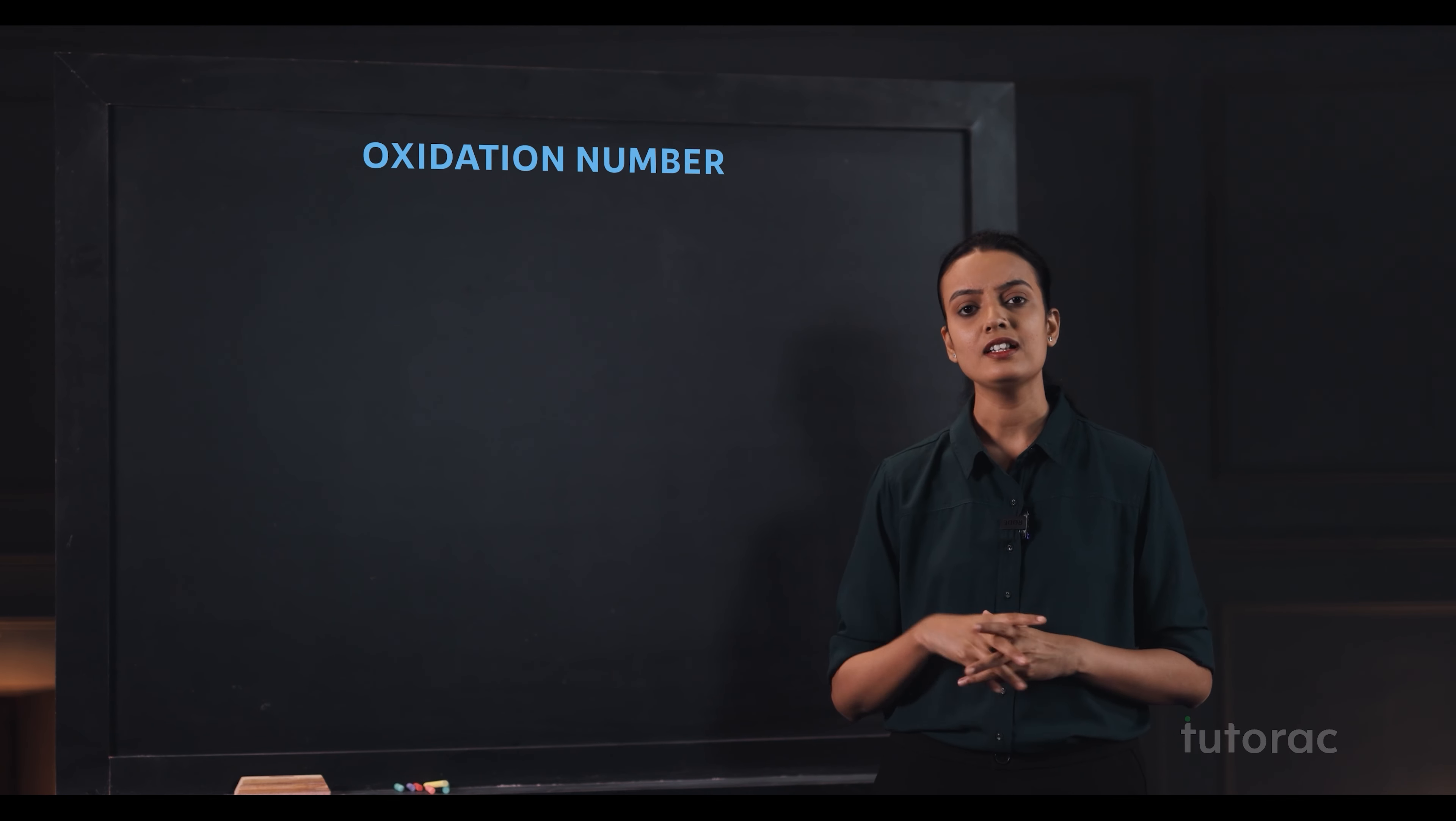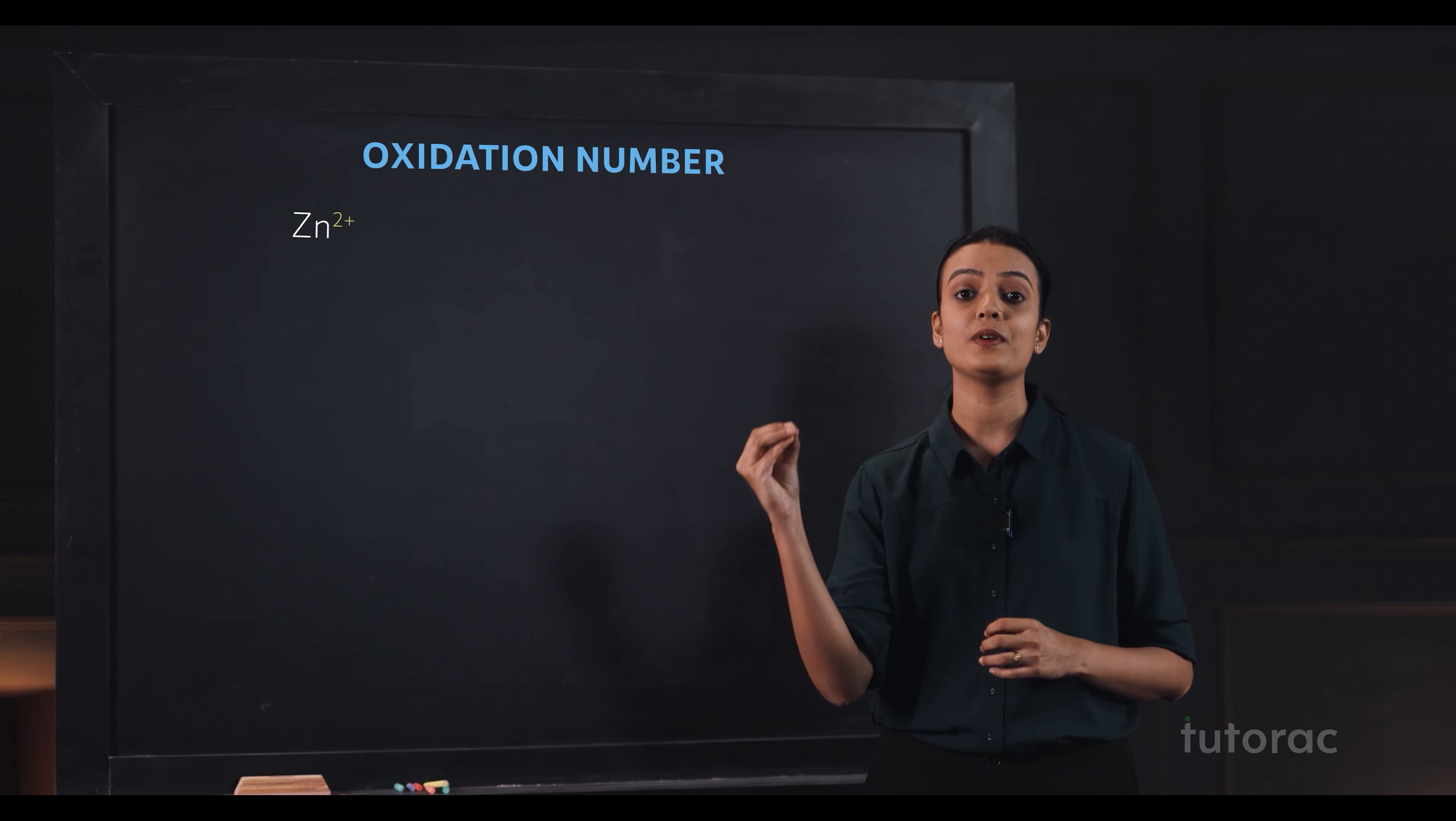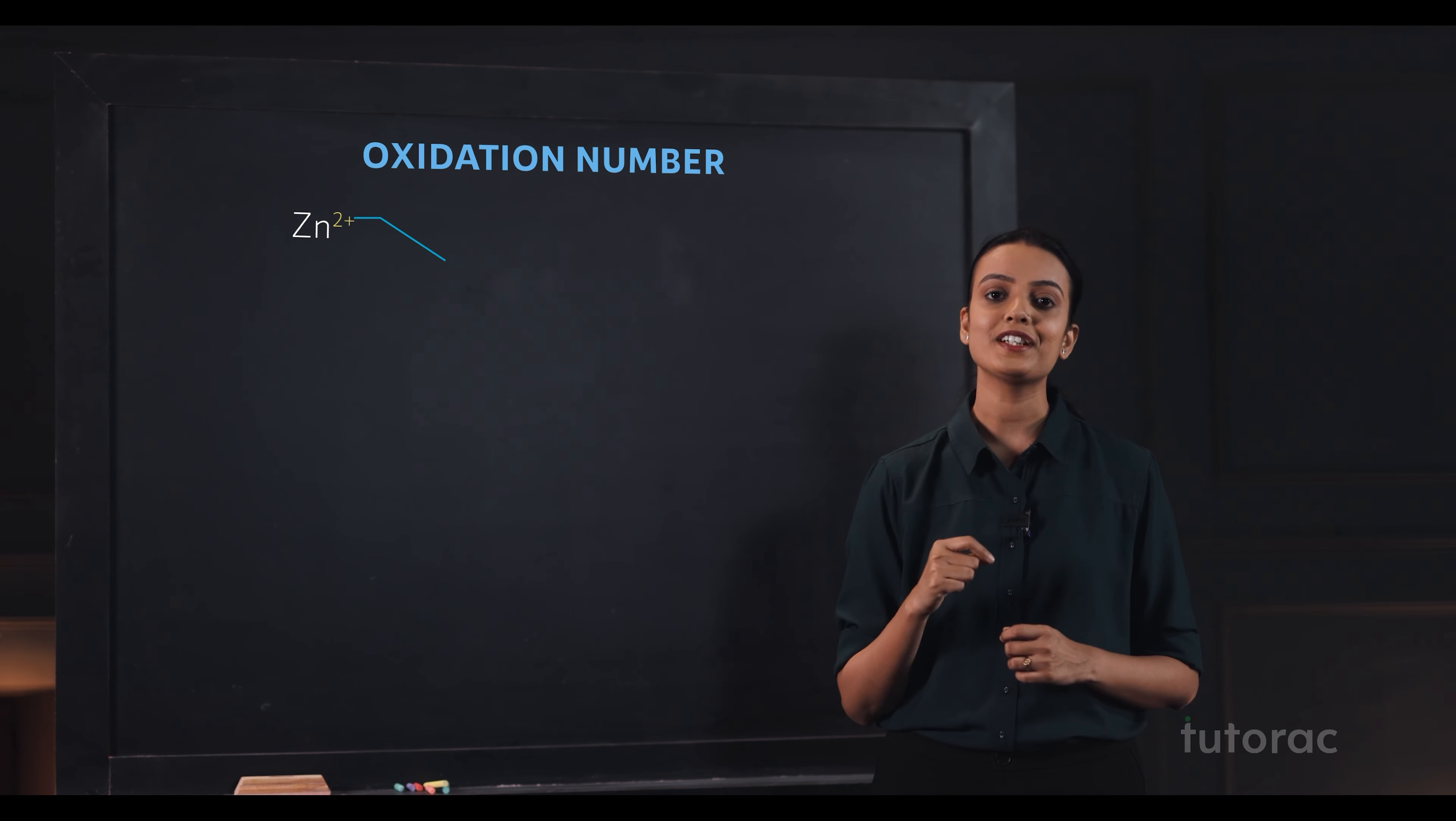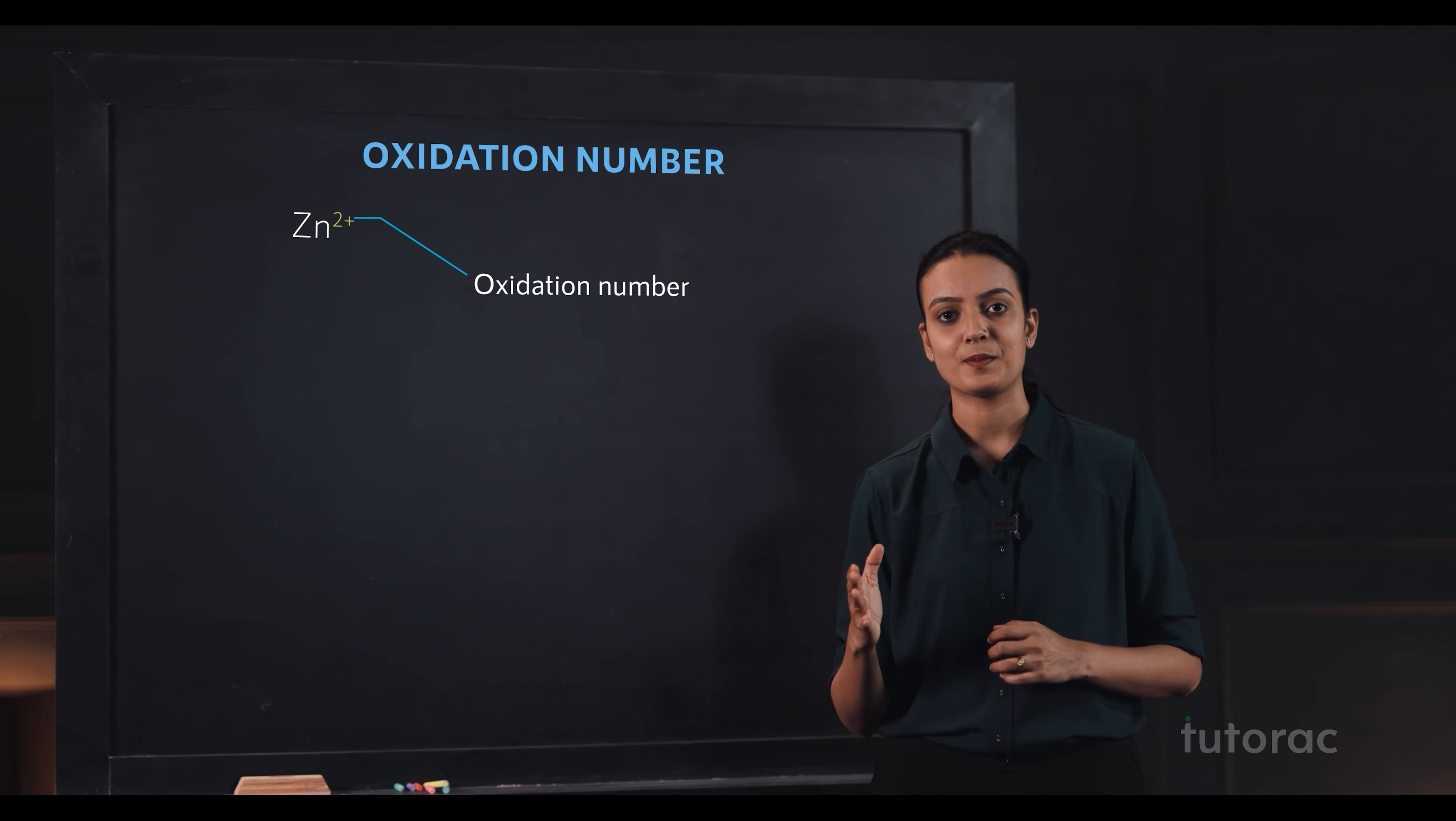Let's say for example, I am taking zinc 2 plus ion. So that plus 2 charge indicates oxidation number for zinc. Coming to nitrate ion, its formula is NO3-. That minus 1 indicates oxidation number for nitrate ion.